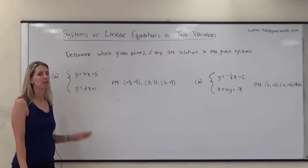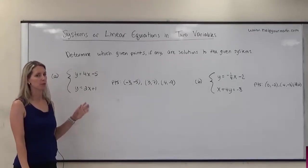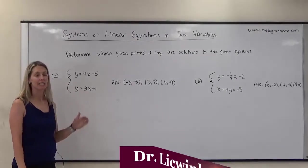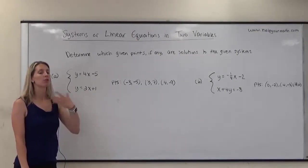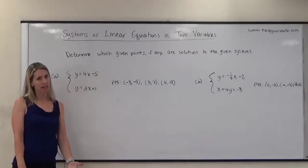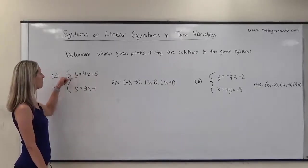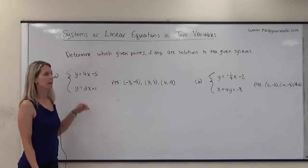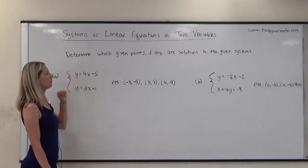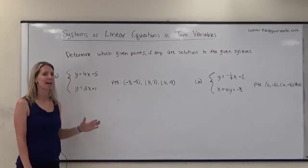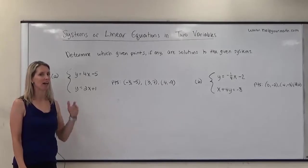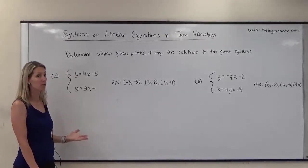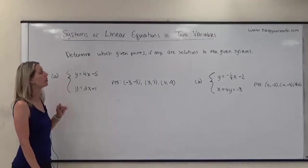In this video, we want to determine if the given points are solutions to the system or not. Each of these are a yes or no question. In order for the answer to be yes, it has to work for both of the given equations. This means we can use a shortcut: if we end up with a no in the first equation, then it doesn't matter whether it works for the second equation, because it has to work for both to be a solution.